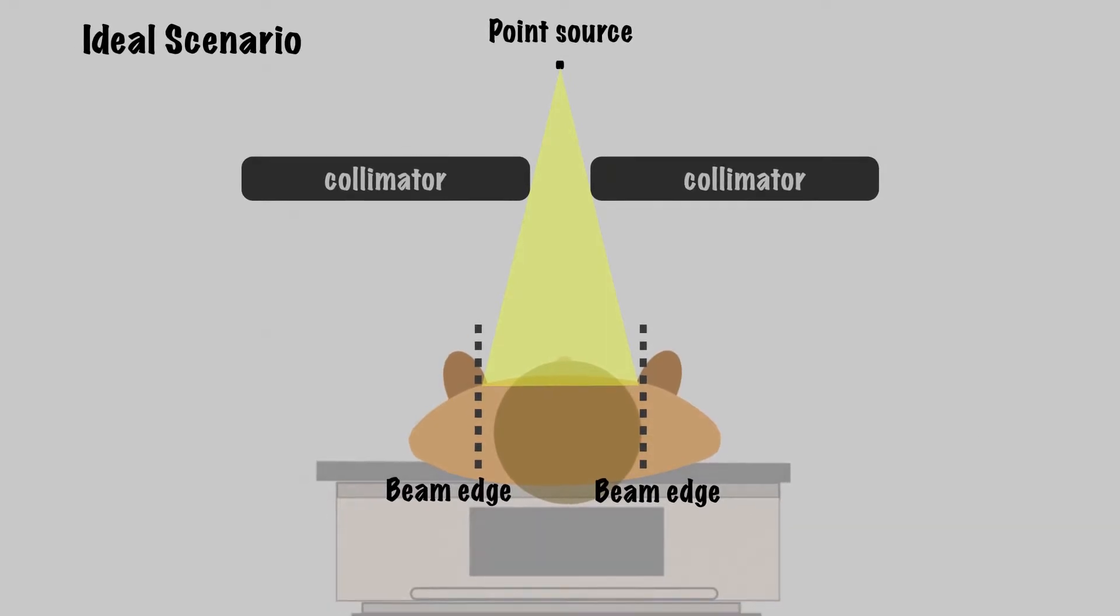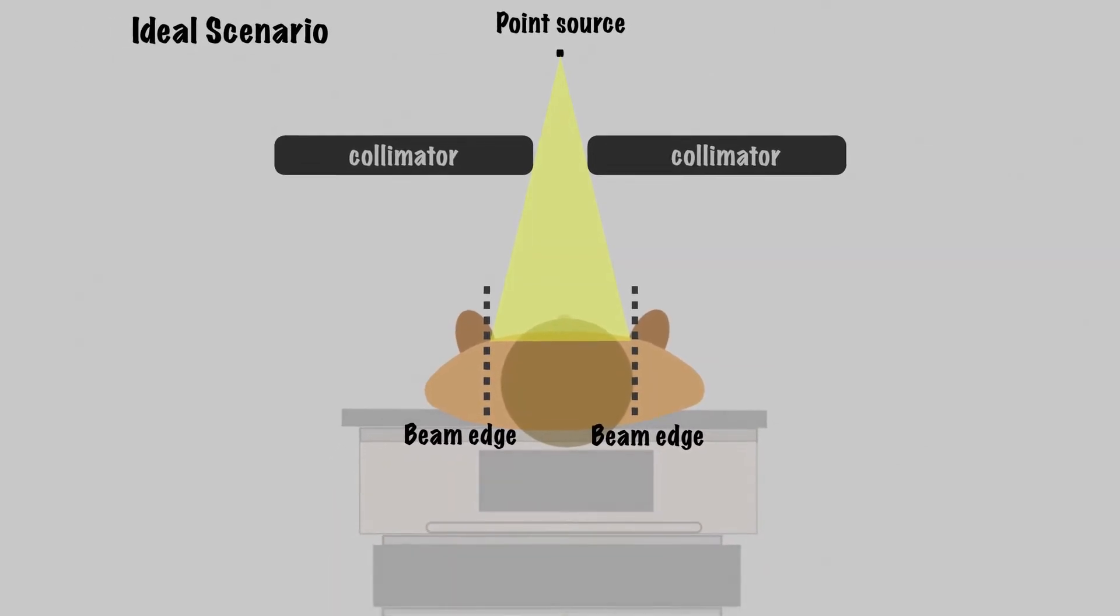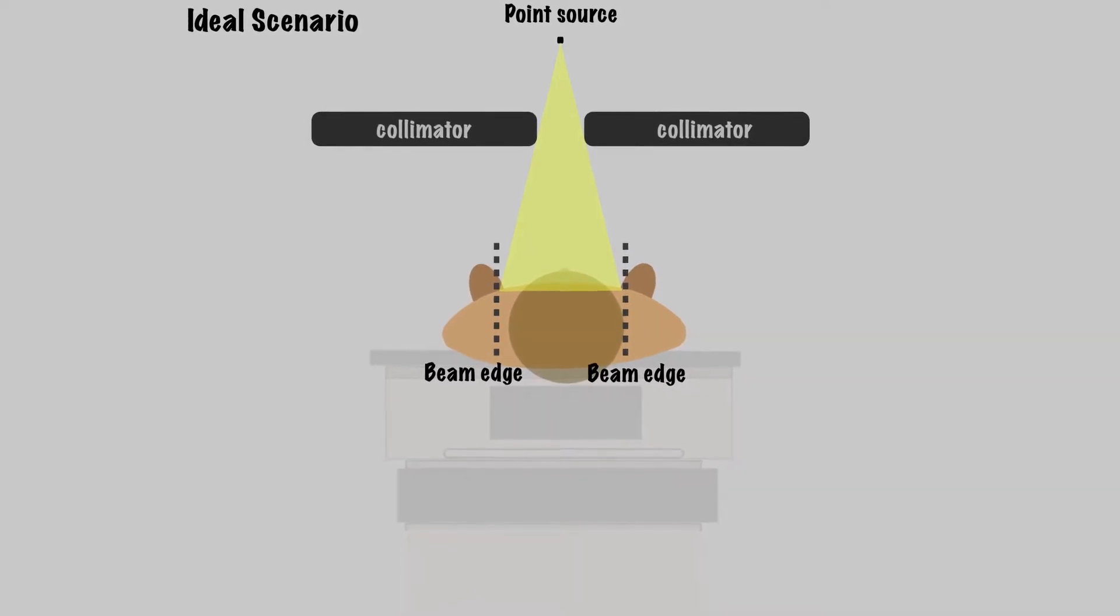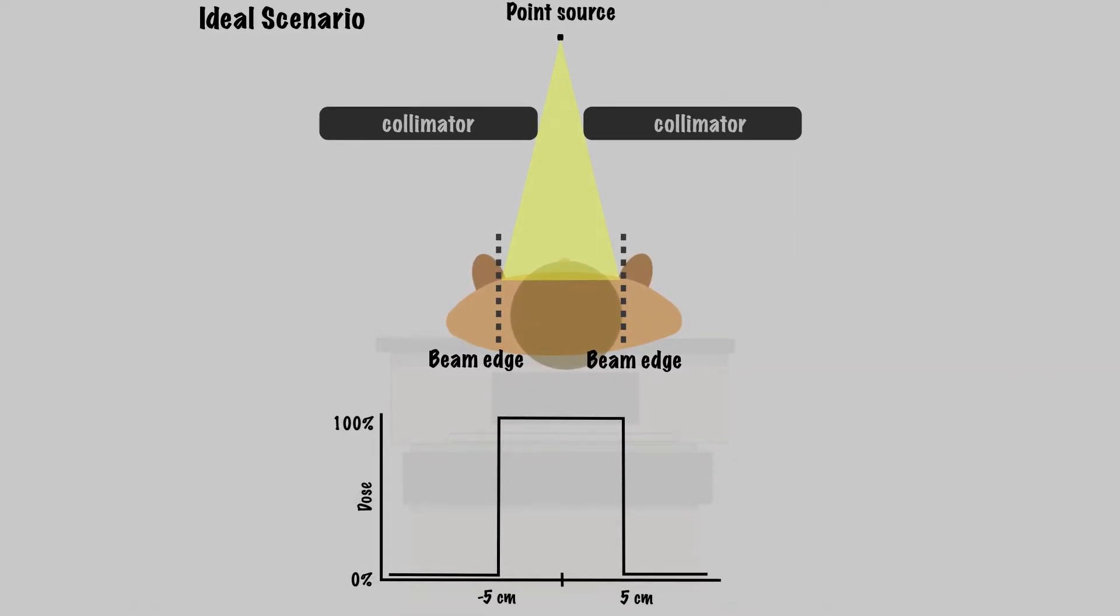Let's draw what the dose profile would look like across the patient at the patient's surface. We start out at a low dose leading up to the edge of the field. Then it jumps up to a 100% dose within the beam, stays pretty even across the field, then drops back down at the other edge of the field.